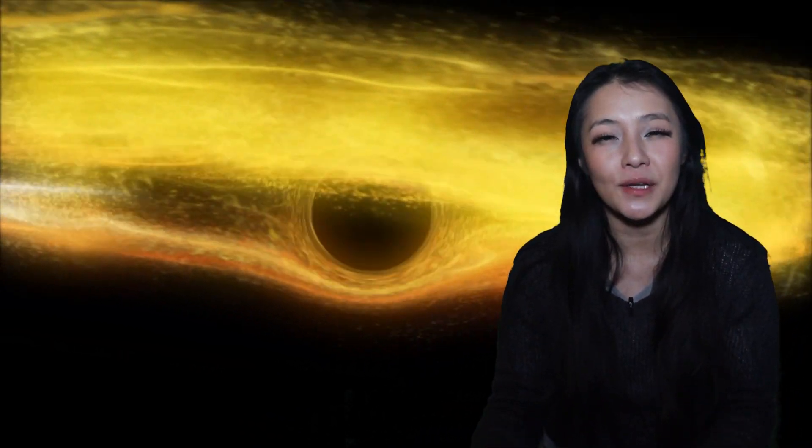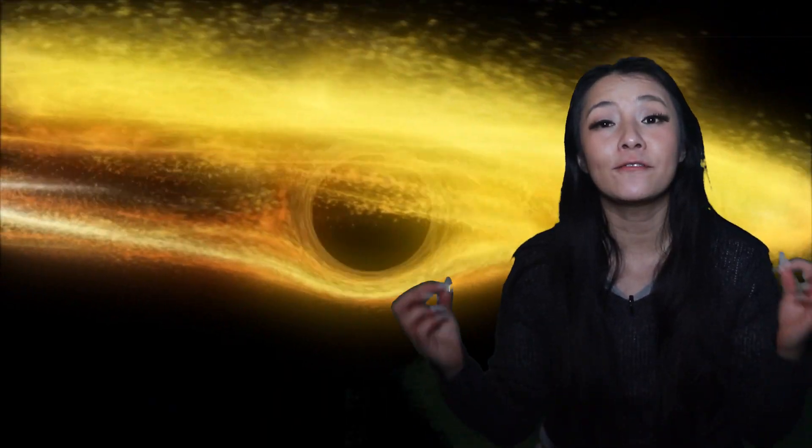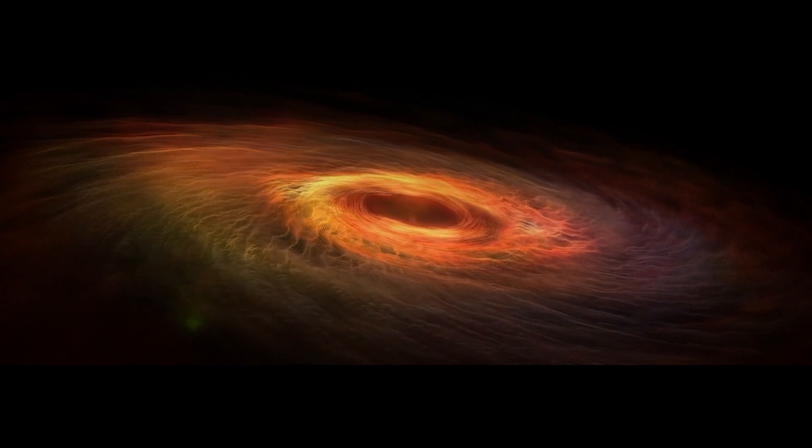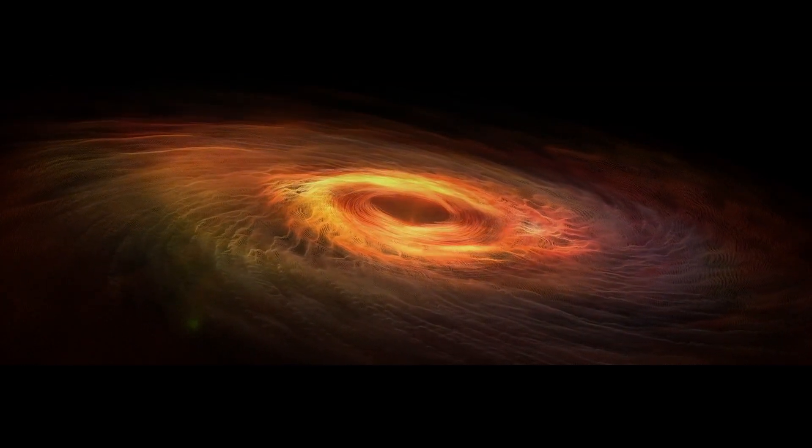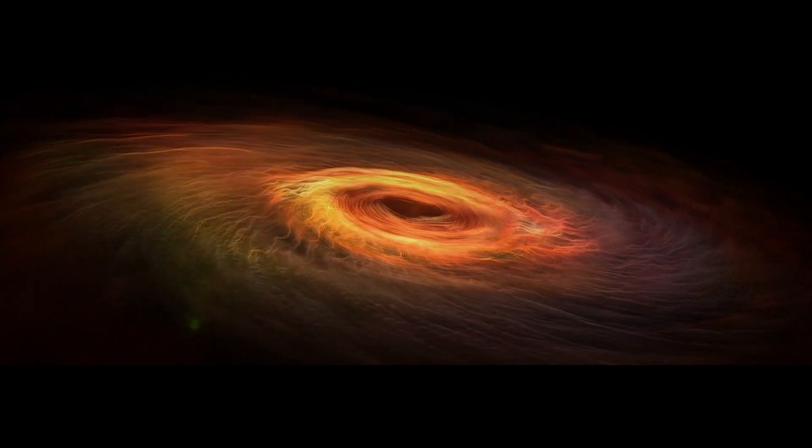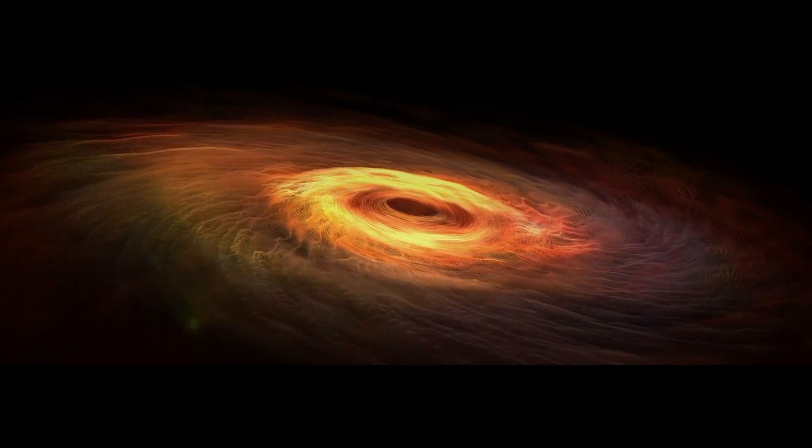When a black hole feeds, the material that is being gravitationally pulled by the black hole's immense gravity will have some small net rotation. And due to the conservation of angular momentum, it cannot simply fall directly onto the black hole along a straight line, but instead it gets squished into a disk that we call an accretion disk.